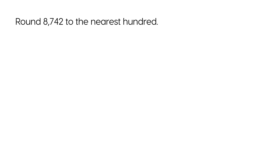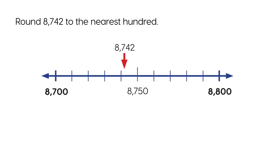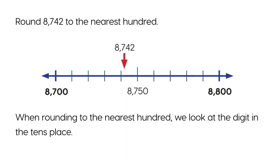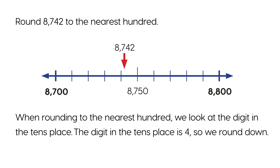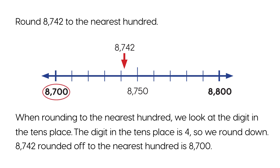Round 8,742 to the nearest hundred. When rounding to the nearest hundred, we look at the digit in the tens place. The digit in the tens place is 4, so we round down. 8,742 rounded off to the nearest hundred is 8,700.